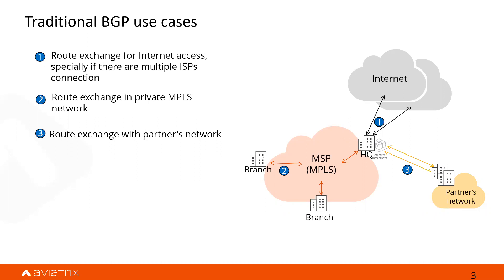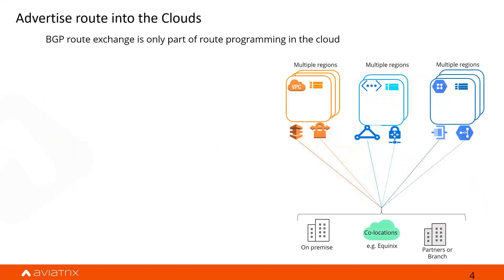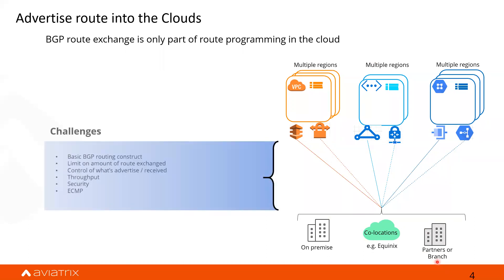When we talk about BGP in the cloud, it's a little bit different. The protocol came about in the mid-90s and there was no cloud. I want to illustrate the challenges with an example. I have multiple cloud service providers with different regions, and different locations to connect — on-prem, co-location like Equinix, or a partner. I break this diagram into three sections covering how BGP is used to distribute routes into the cloud environment.